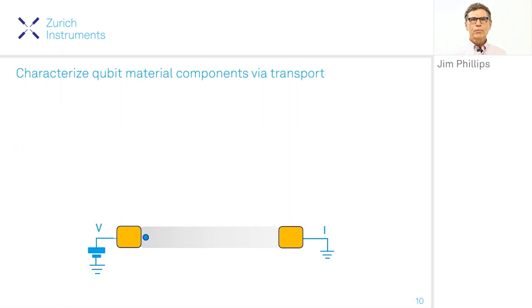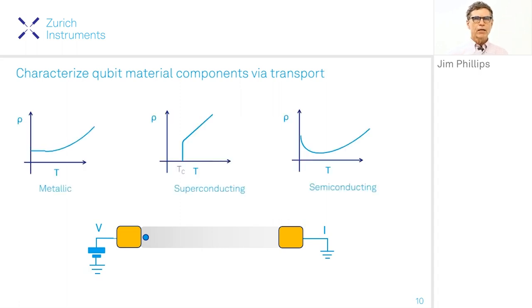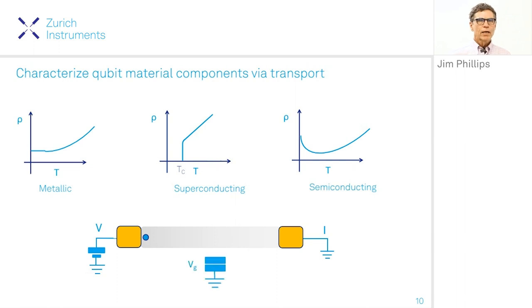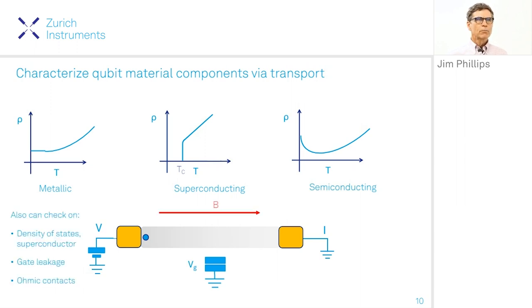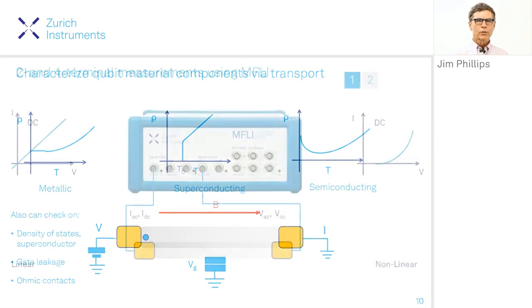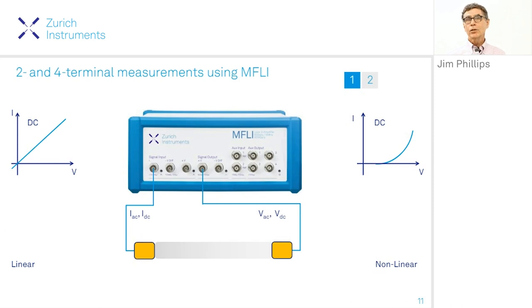If we have a material and want to measure transport through it, we apply a voltage and measure the current, obtaining a conductance as a function of temperature — giving the characteristic of a normal metal, superconductor, or semiconductor. We can study the effect of adding a gate voltage or a magnetic field. In particular, when we tried to make an insulating gate, is it really insulating? When we tried to make an ohmic contact, is it really ohmic?